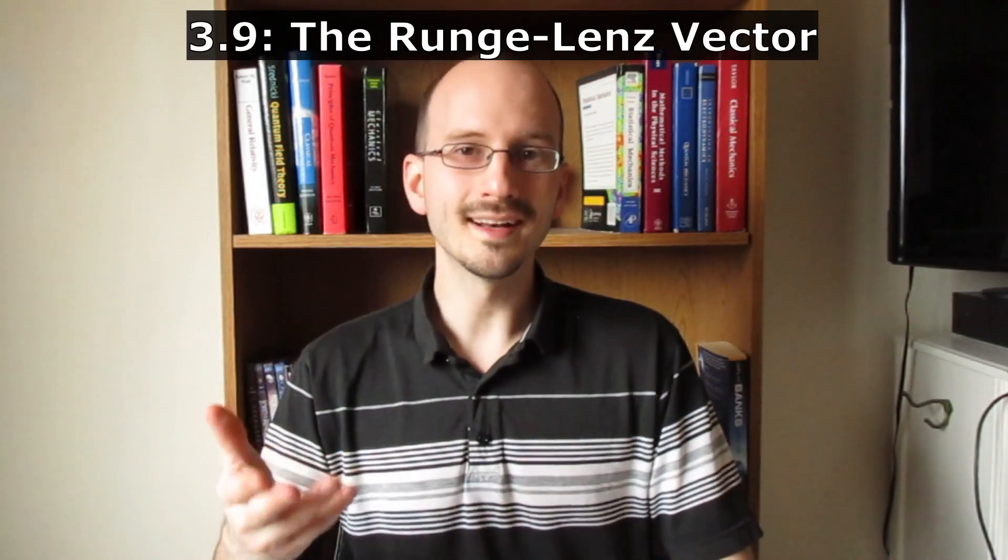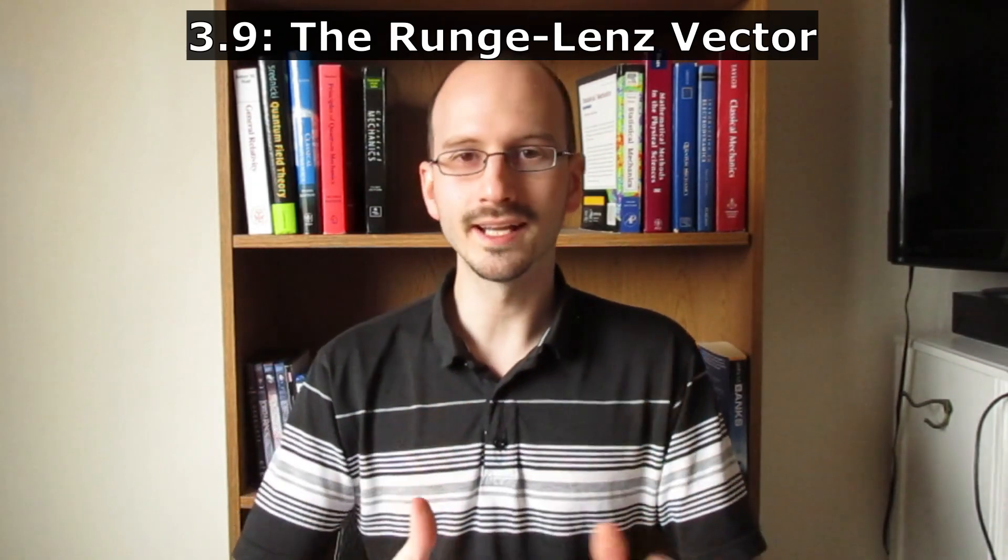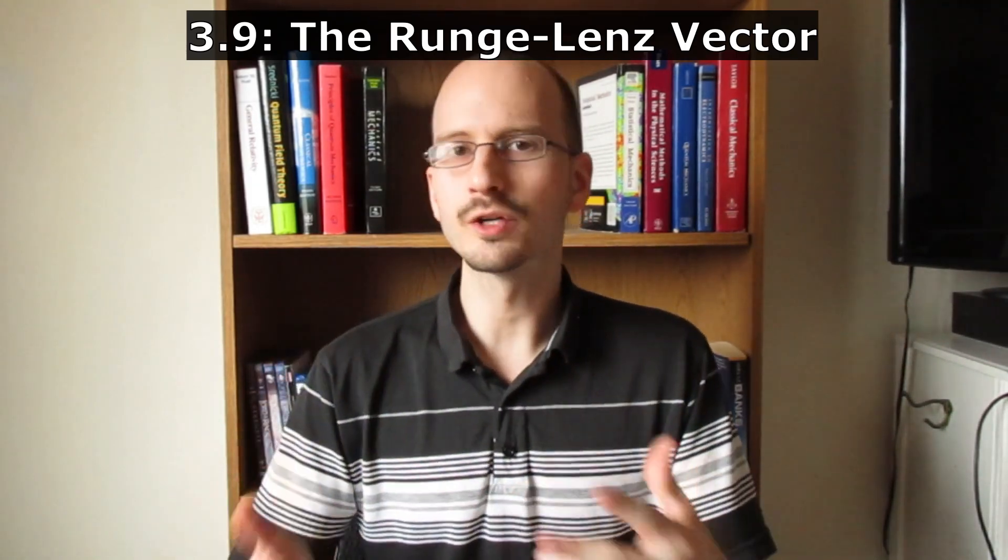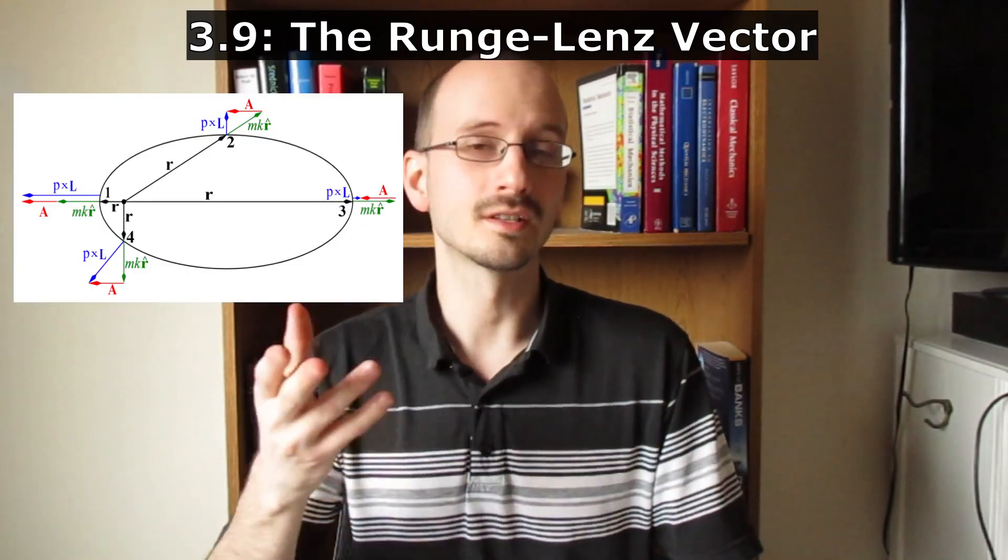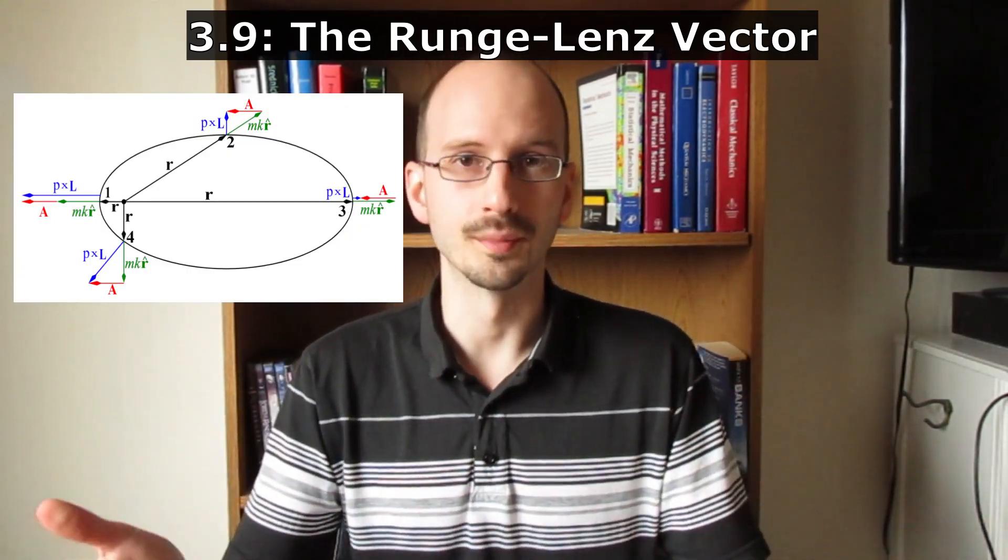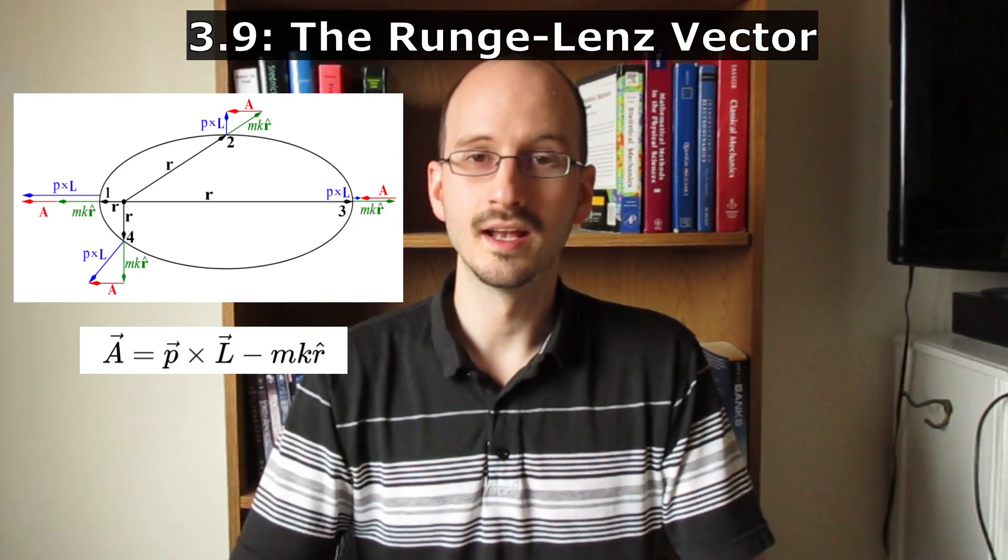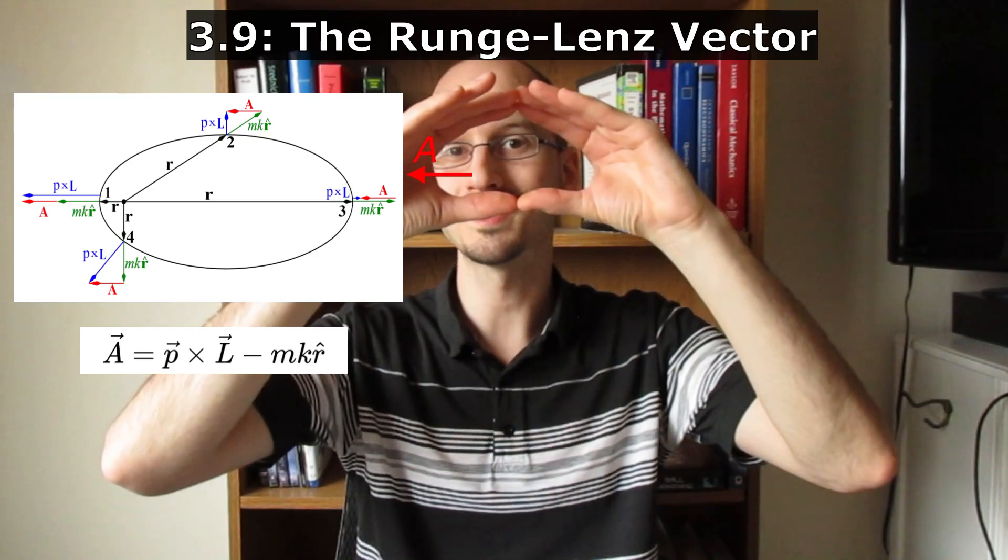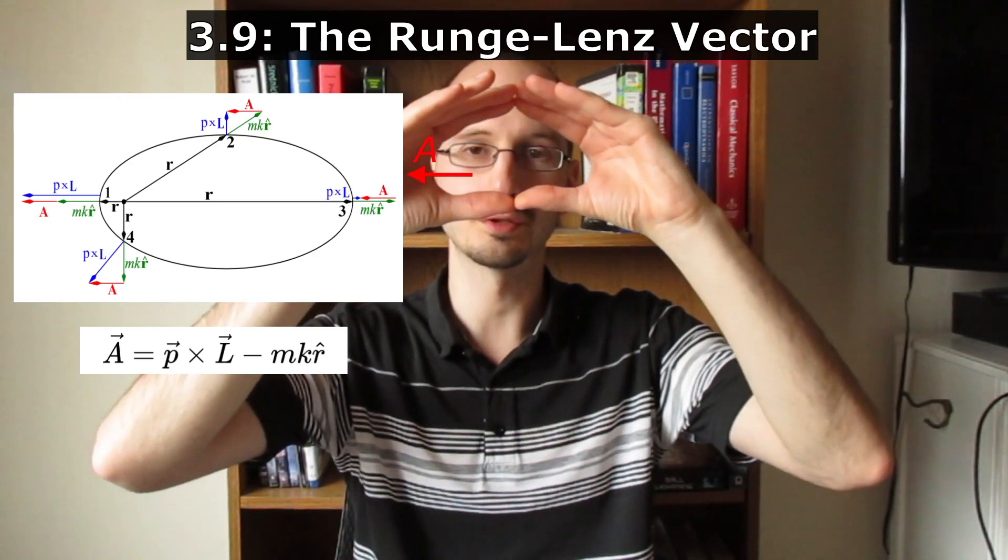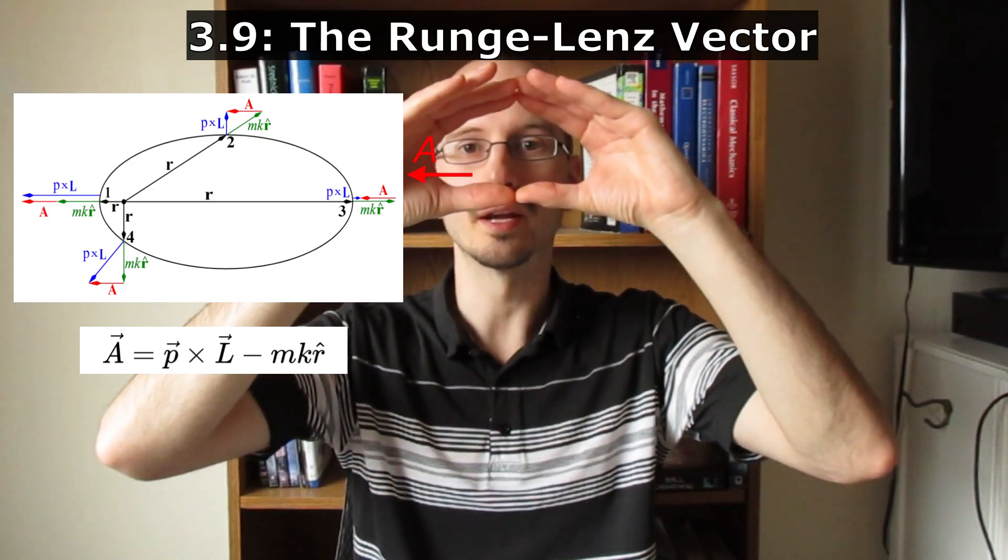Section 3.9 talks about the Runge-Lenz vector. Now, it's kind of hard to imagine what this is, but it is a vector that is conserved in elliptical orbits. Its equation is this, and if we look at our ellipse, it points in the direction from the central force to the closest edge of the ellipse, the periapse.